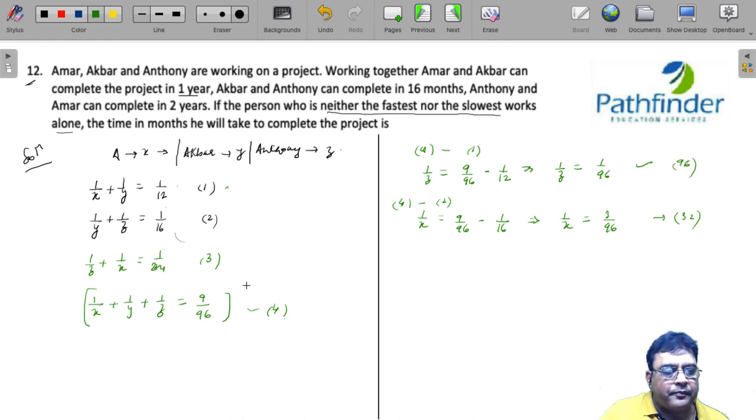What about Akbar? If I subtract 4 from 3, I will get 1 by Y is 9 by 96 minus 1 by 24, which is 5 by 96. So 1 by Y is equal to 5 by 96.